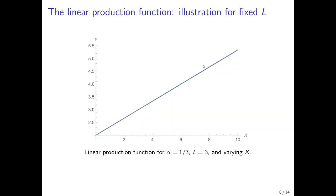Holding labor constant at 3 and varying the capital stock K, with alpha equal to one-third, we see that output increases at a constant rate — it does not diminish. We have a linear production function and can substitute capital perfectly by labor. This means there is no diminishing marginal product, and this production function does not fulfill the properties of a neoclassical production function. The slope of this line depends on alpha, because alpha determines how much capital is needed to compensate for one unit of labor.